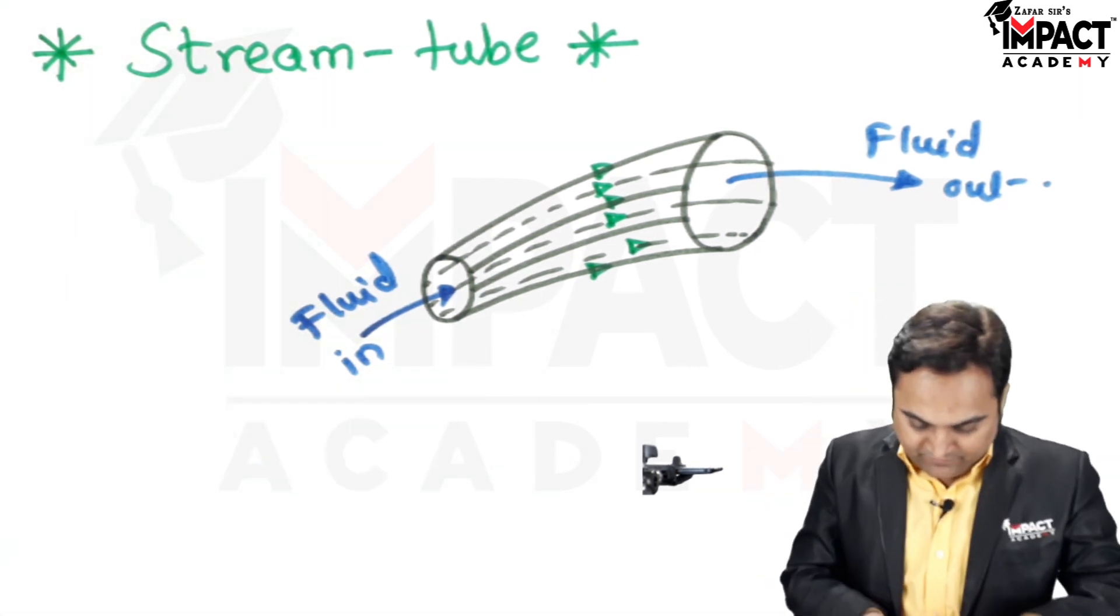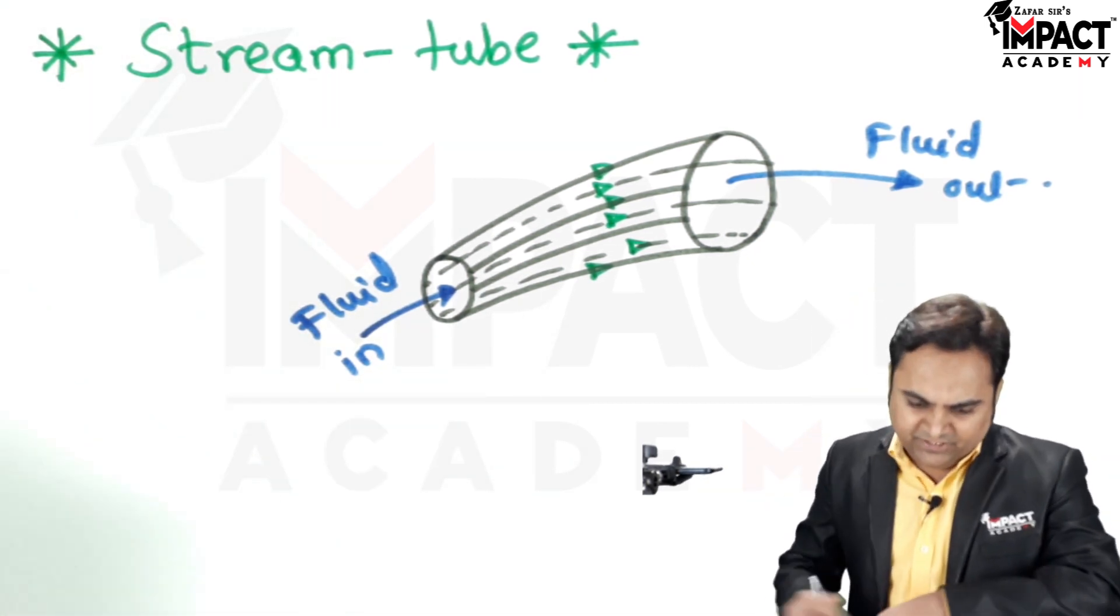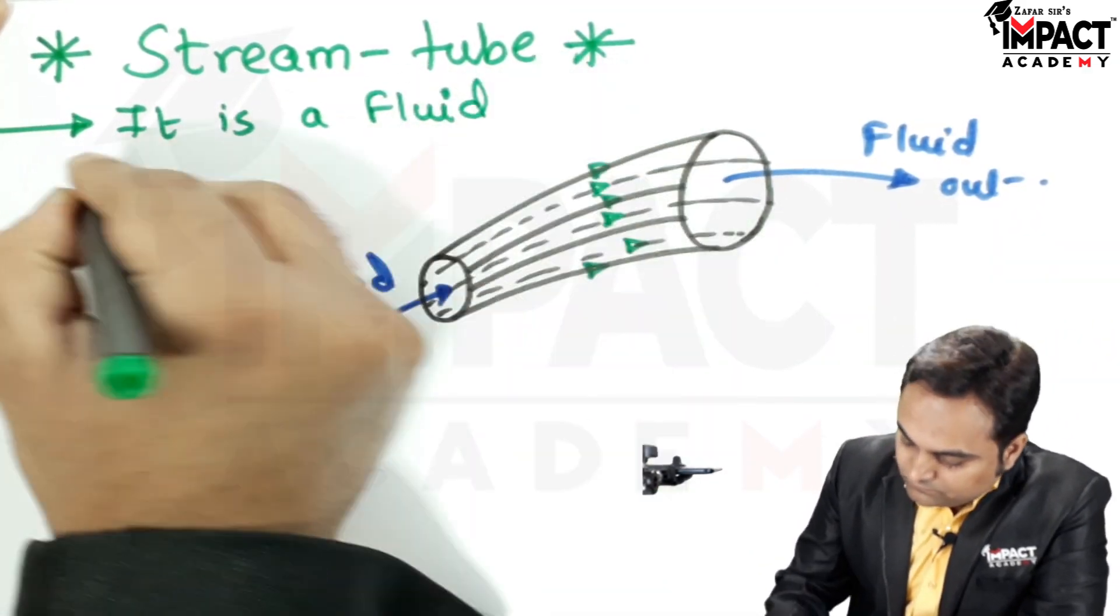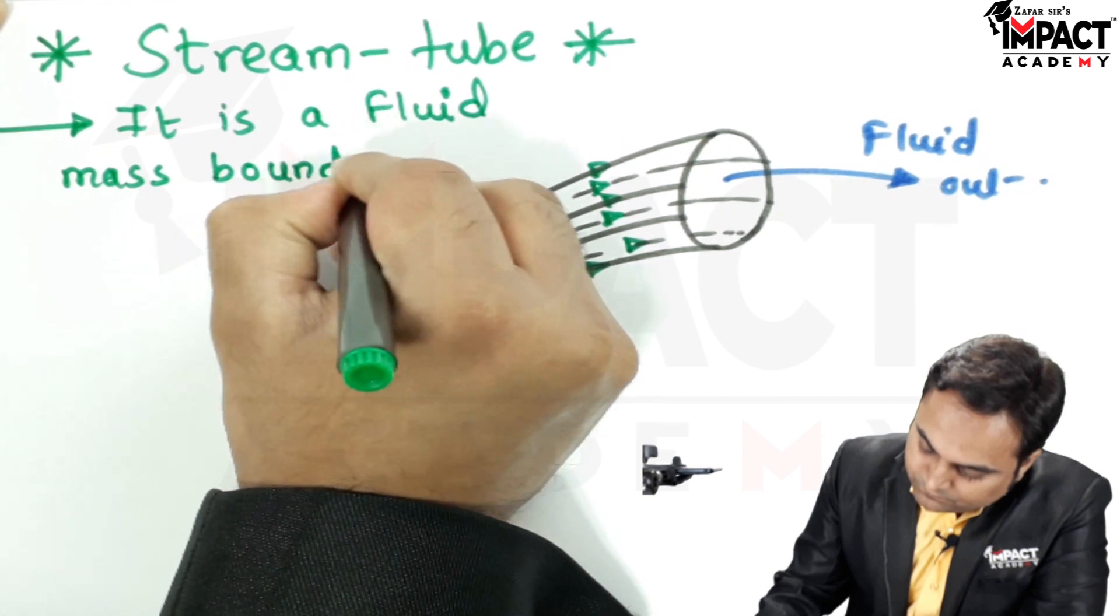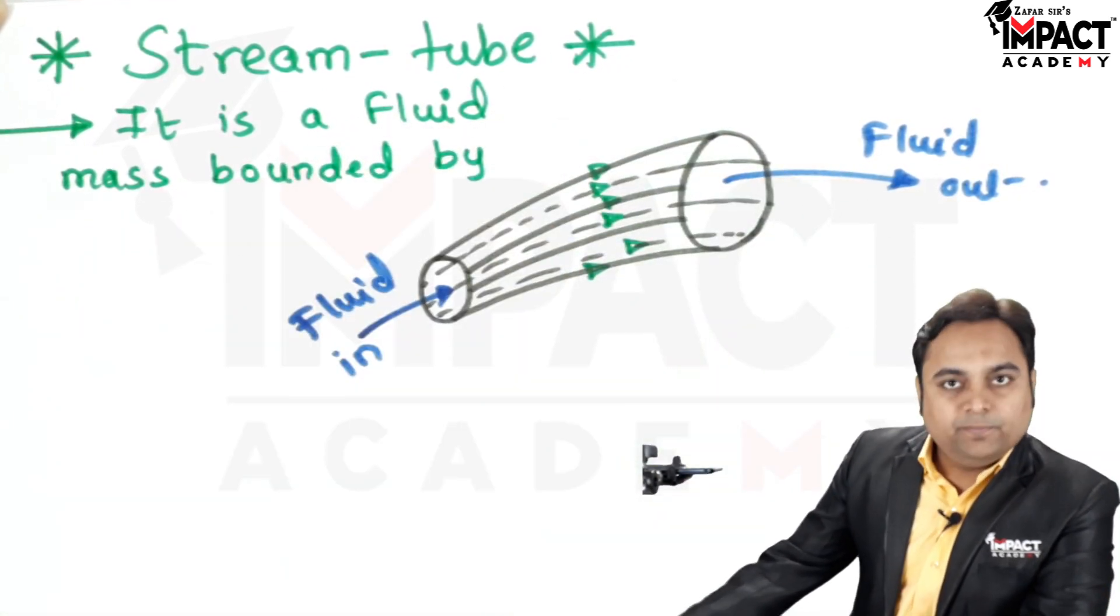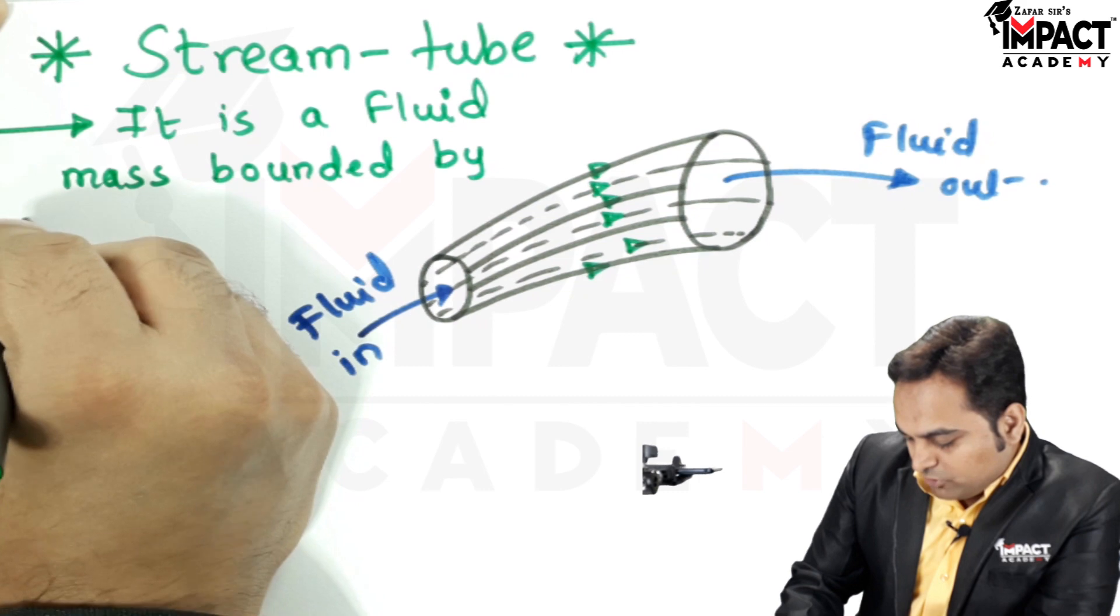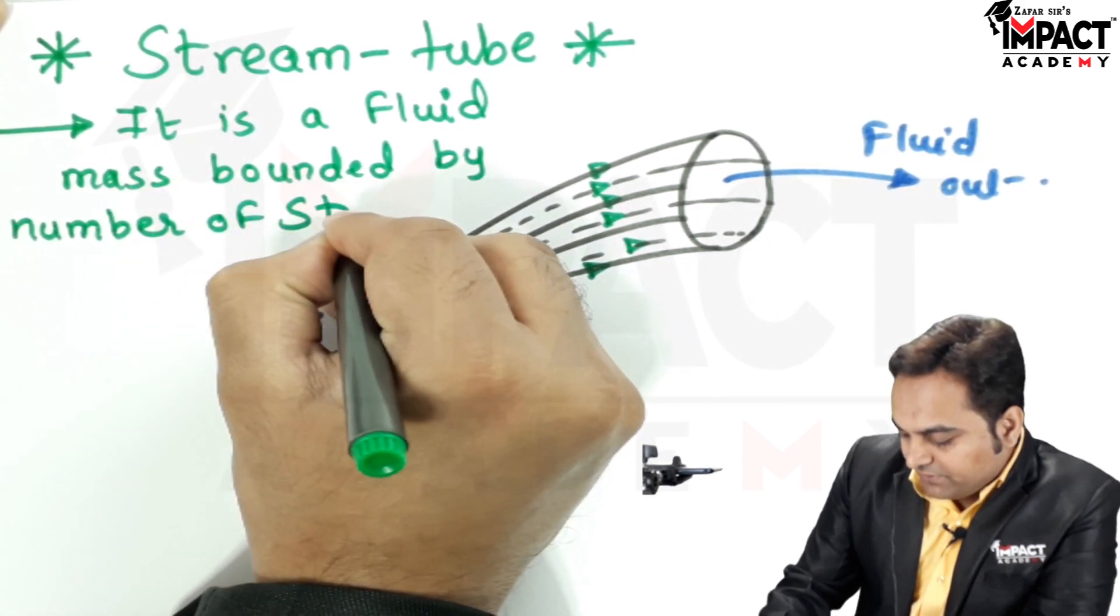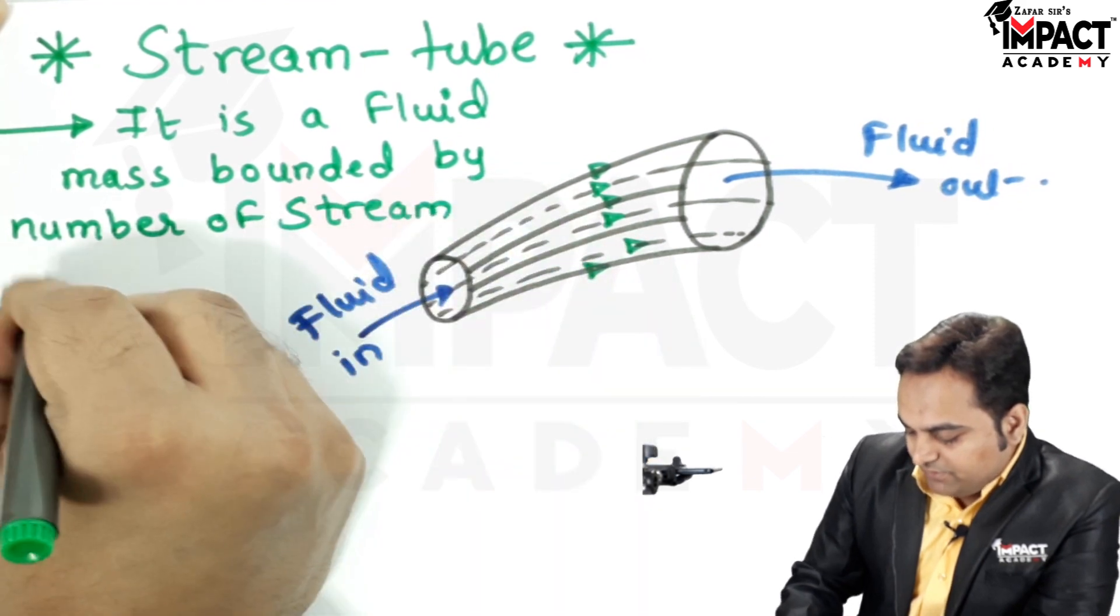So therefore I can write here that stream tube it is a fluid mass which is bounded by number of streamlines or various streamlines and what are streamlines?